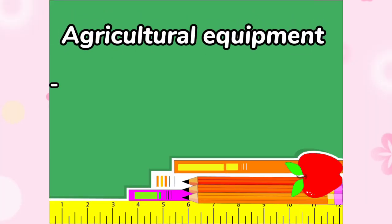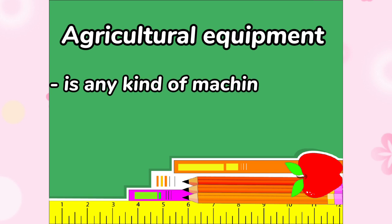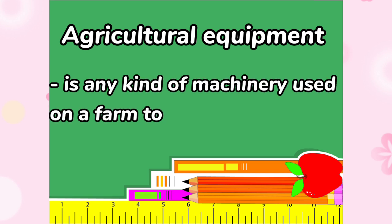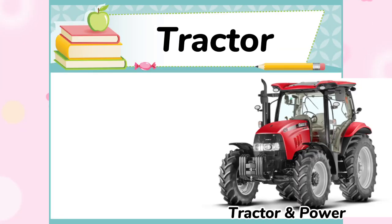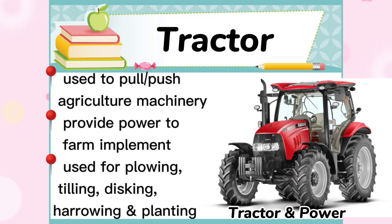Agricultural equipment is any kind of machinery used on a farm to help with farming. The best known example is the Tractor. It is a farm vehicle that is used to pull or push agricultural machinery.